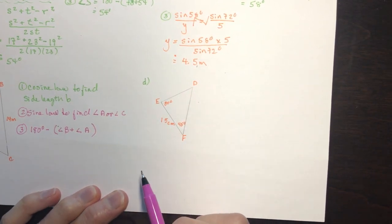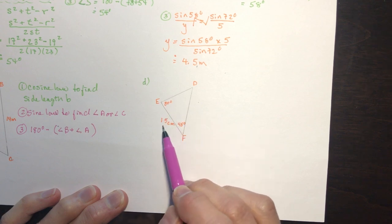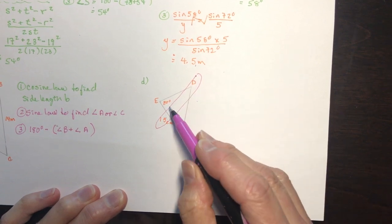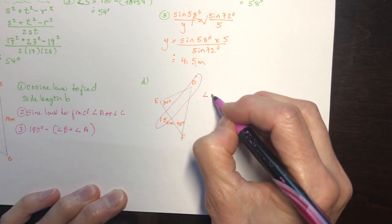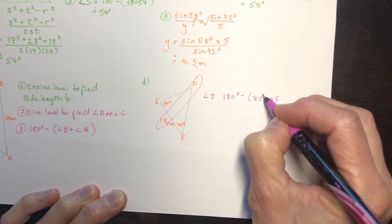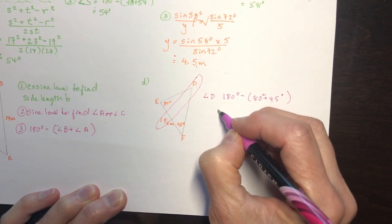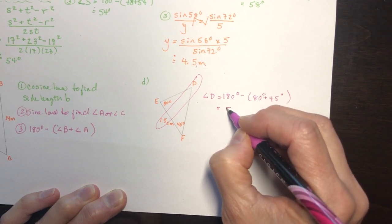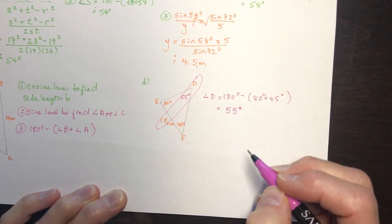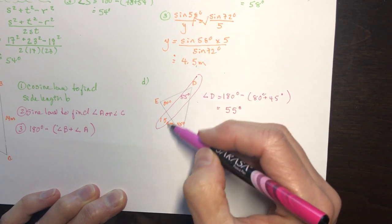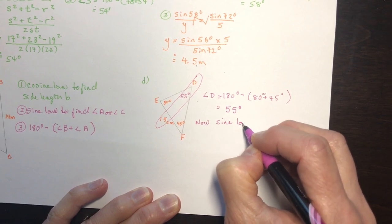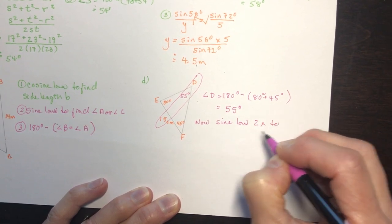The last question has angles of 80 and 45 degrees with one side of 15. Since I already have two angles, I can find the third angle D right away: 180 minus (80 plus 45) equals 55 degrees. With all three angles known, I use the sine law twice to find the remaining side lengths.